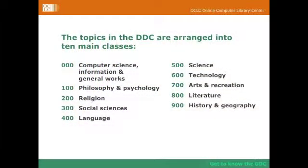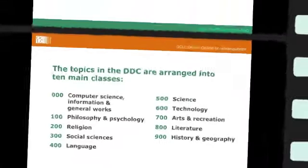They start from triple zeros and go to 900. There are 10 main classes that are divided into 10 divisions like this: 000 — computer science, information and general works; 100 — philosophy and psychology; 200 — religion; 300 — social sciences; 400 — language; 500 — science; 600 — technology; 700 — arts and recreation; 800 — literature; 900 — history and geography.